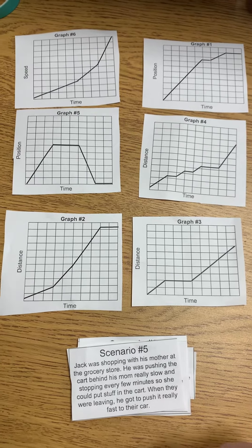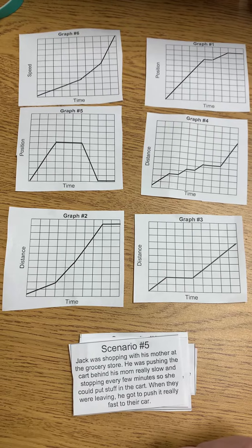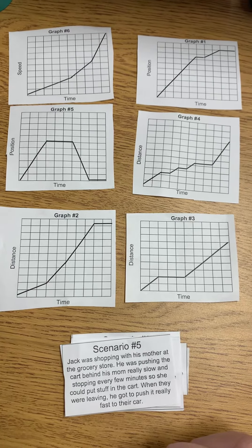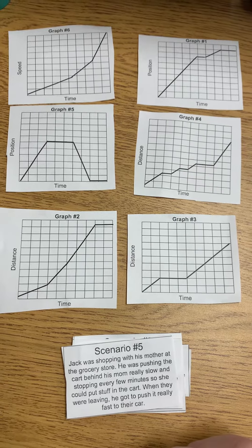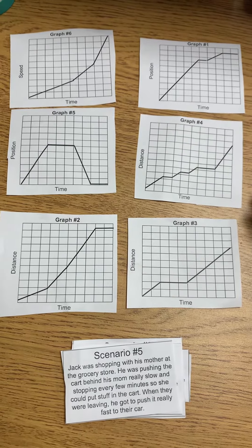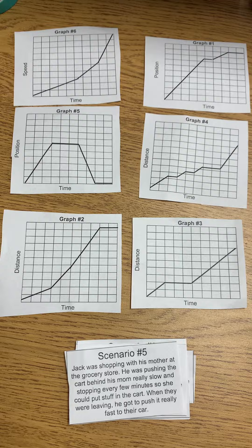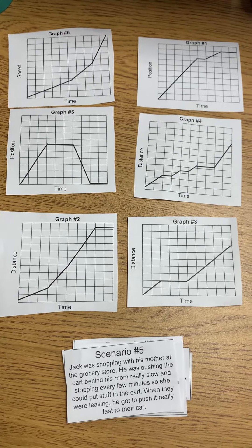So one thing that stands out in this scenario for me is that since they were at the grocery store, they were stopping a lot and they were stopping frequently. So if you look at these graphs here, which one looks like there's a lot of short stops every few minutes?